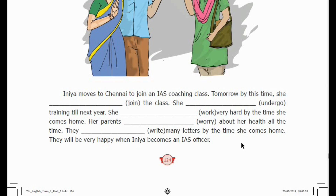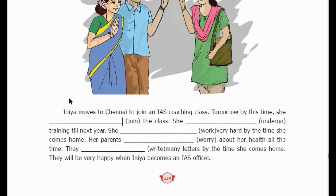That is the Future Perfect Tense. Future Perfect Tense uses 'will' or 'shall' plus 'have,' plus the past participle form of the verb. Fill in the blanks using this formula. For example, 'would have returned.' Try filling in the blanks — the answers are provided for reference. This is how we use Future Perfect Tense in exercises.